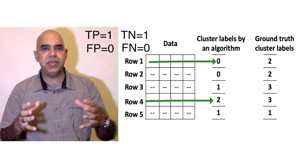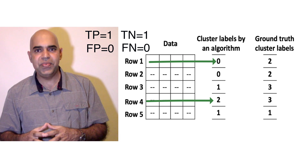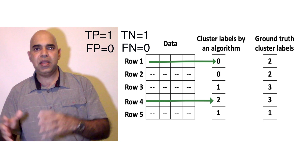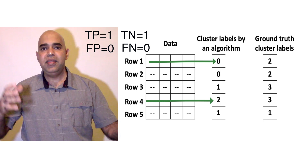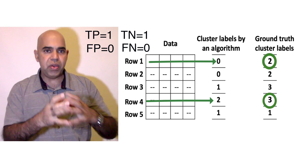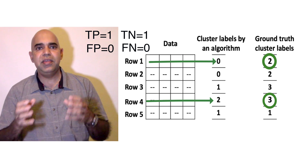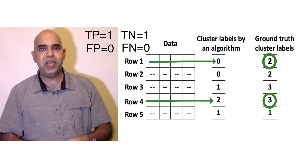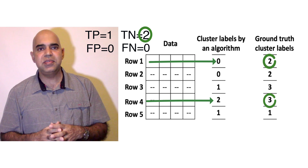Now, the first row and the fourth row. These are from two different algorithmic clusters and hence negative. They are also from two different ground truth clusters. Hence, we have another true negative. So far, we have seen two true negative pairs.